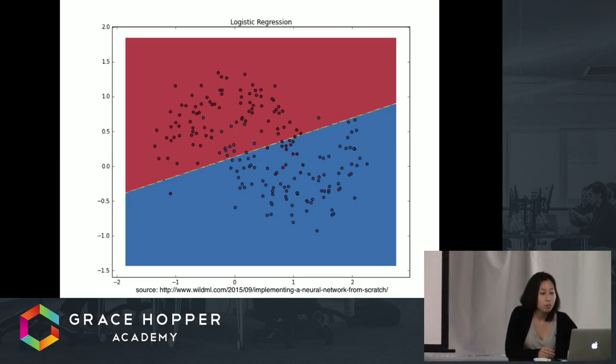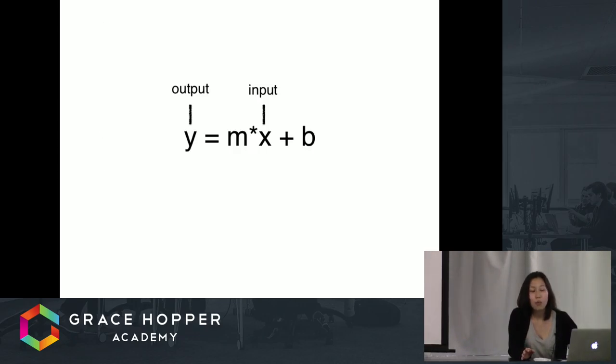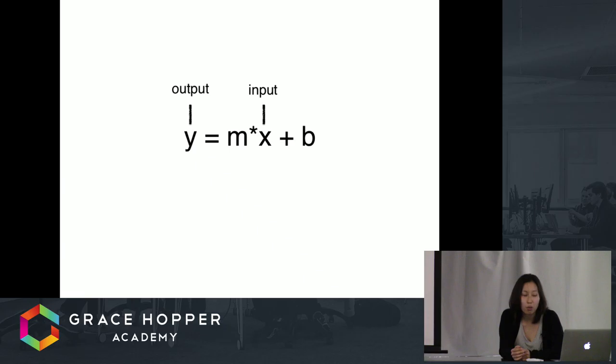This is pretty good. If we go back to our pre-algebra classes, we were often told to solve for M and B given X and Y. I want you to remember this because this is the core of training a neural network. We want to find the M and B that will give us the correct output given input.